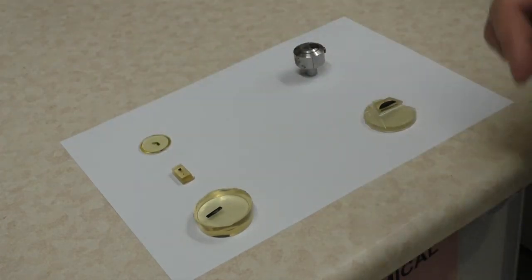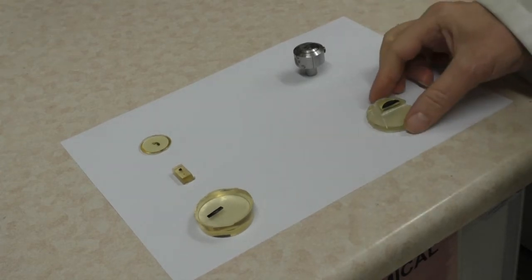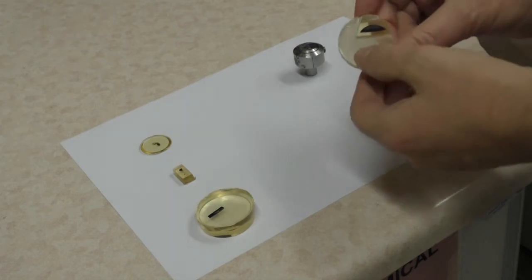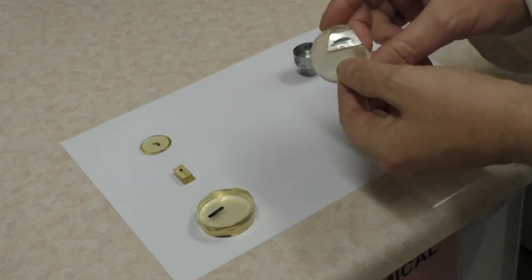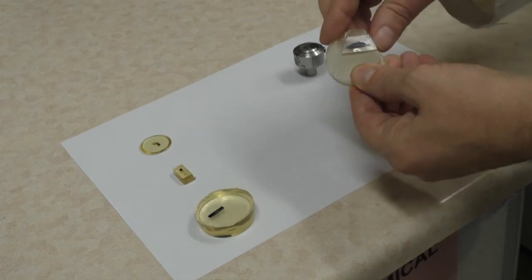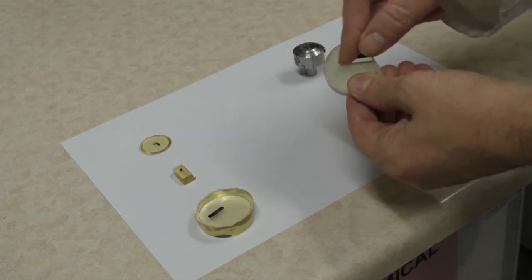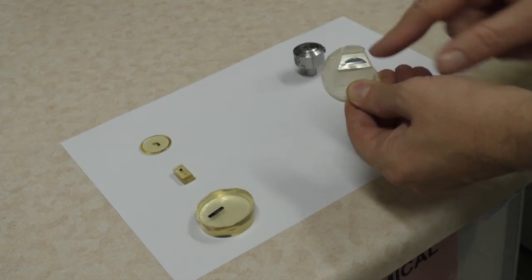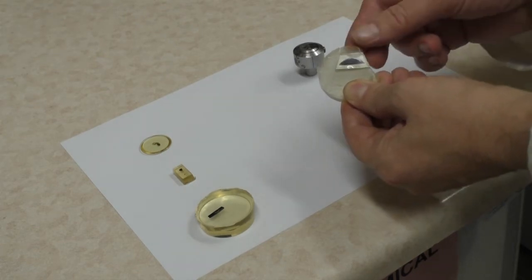What we need to do with that, in order to get sections for the electron microscope, is to trim the blocks down. This is significantly larger than it would normally be, but we trim down with a variety of cutting methods, usually with a razor blade, to produce this sort of trapezium shape, which contains our subject of interest.